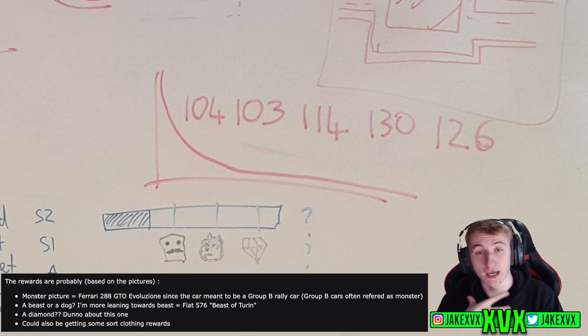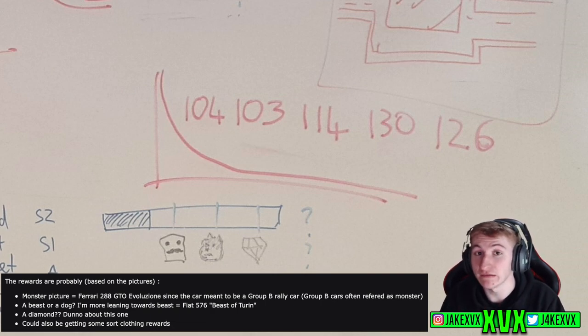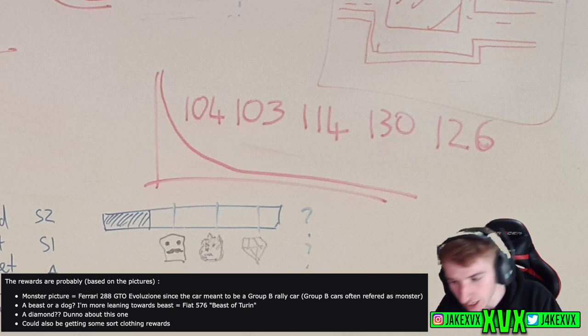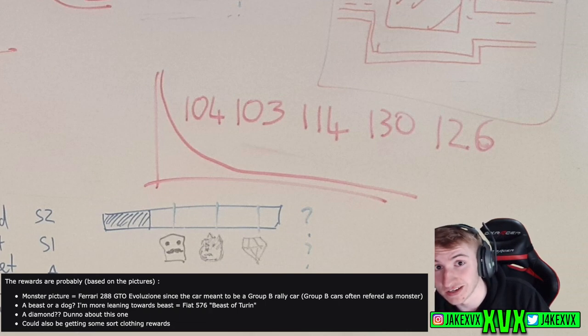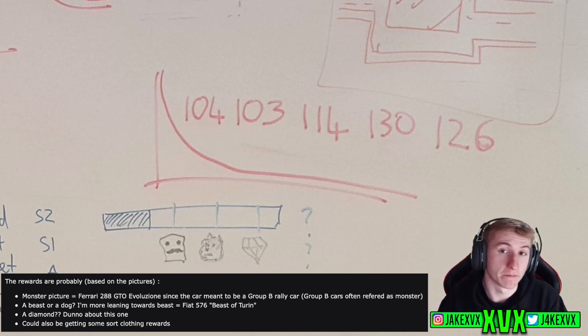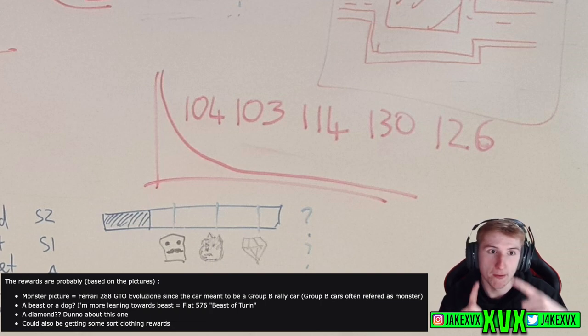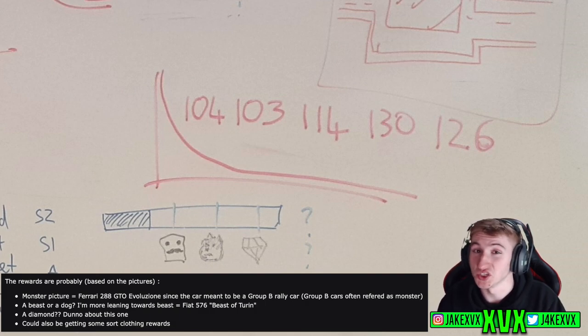A few people have had a few theories about what these icons could mean. The first one apparently looks like a bit like a monster and could be to do with the Ferrari 288 GTO Evolution which has been found leaked within the files. Check out my leaked videos if you're interested in that. This car is known as a Group B rally car also known as a rally monster. Could that be what the monster icon is hinting towards?